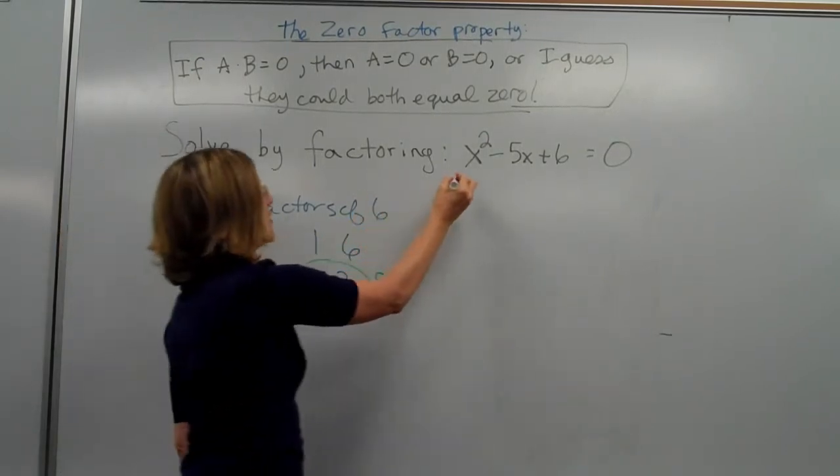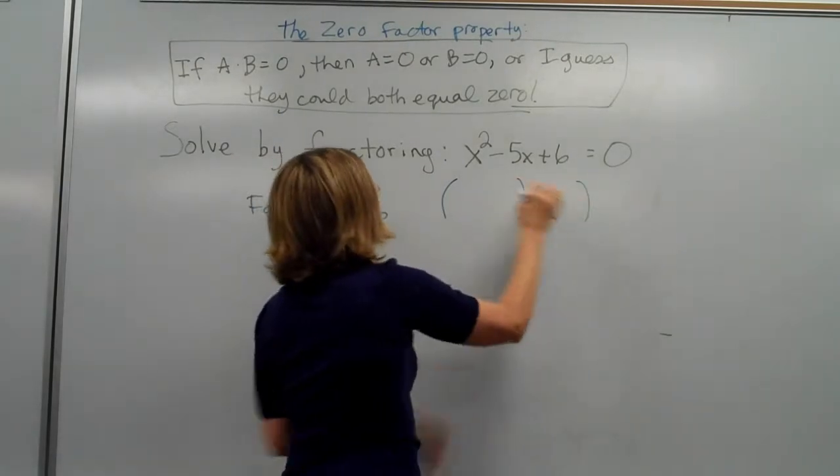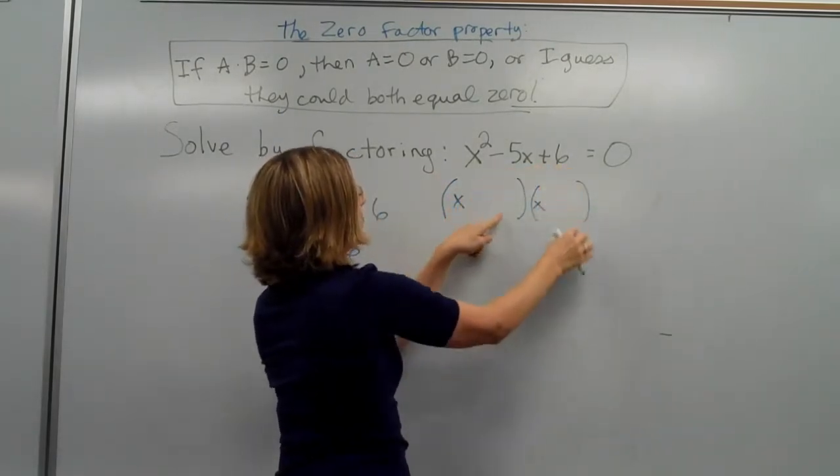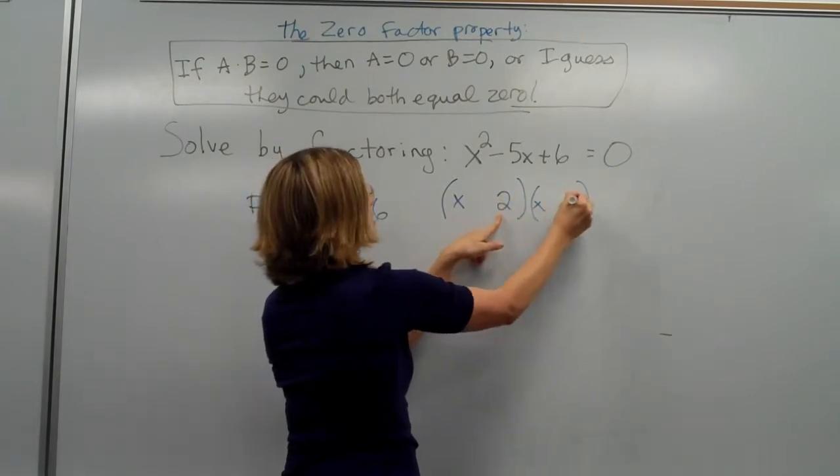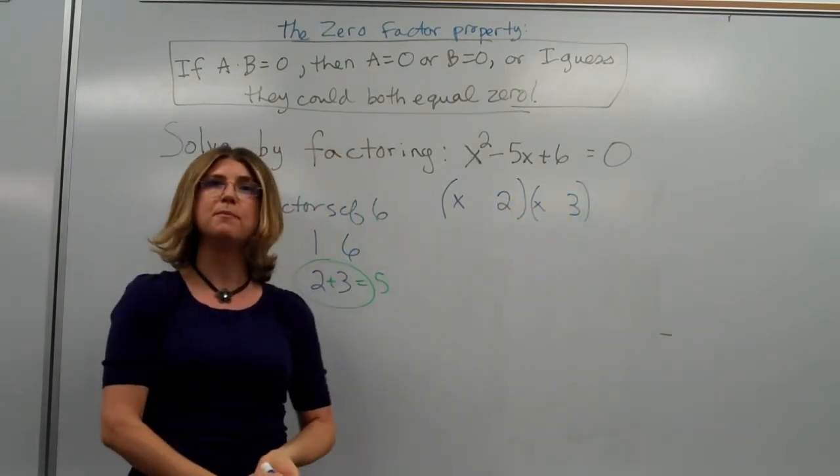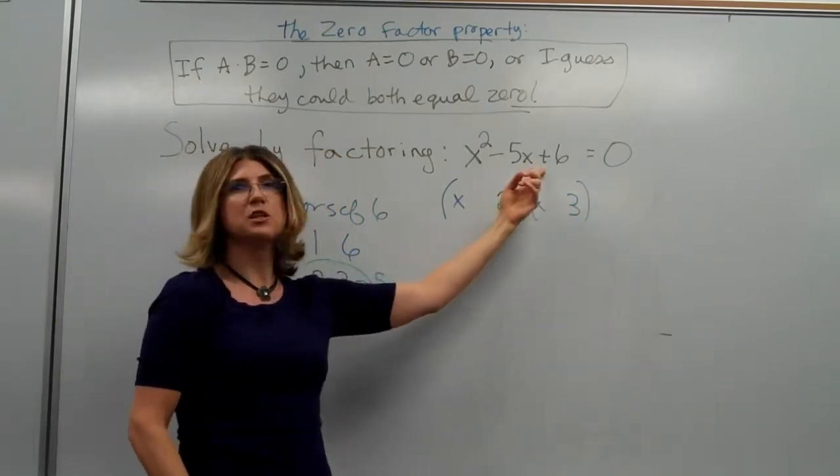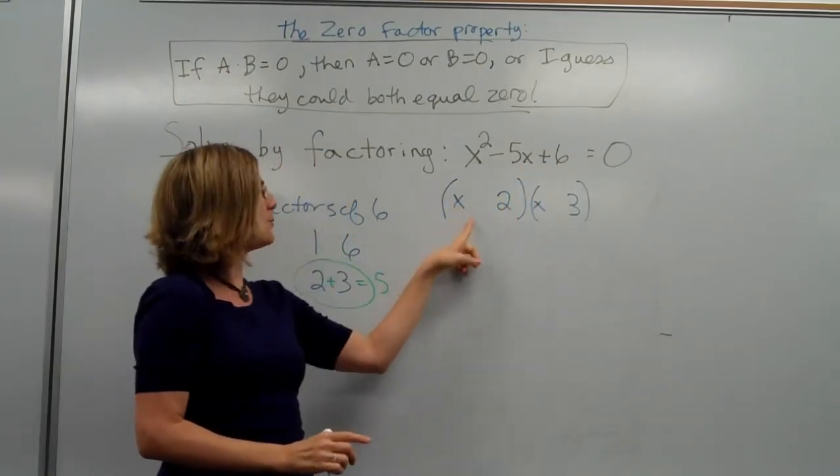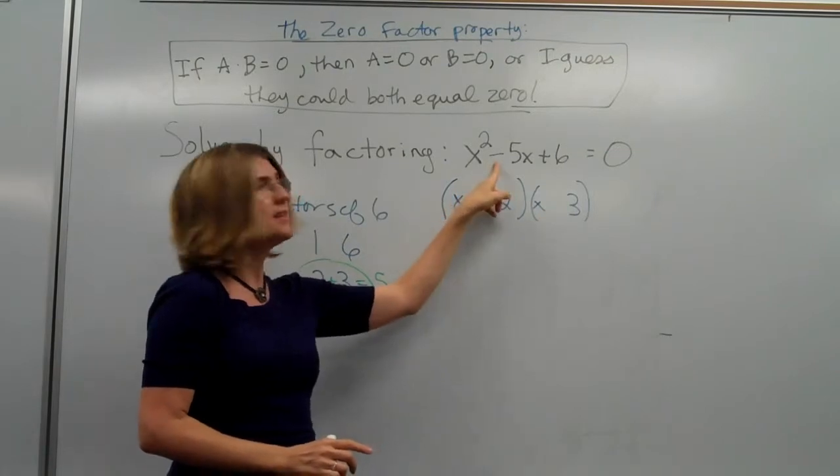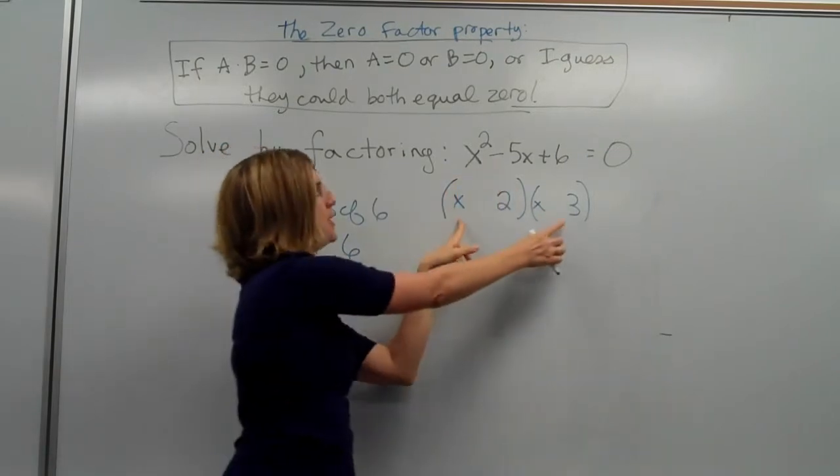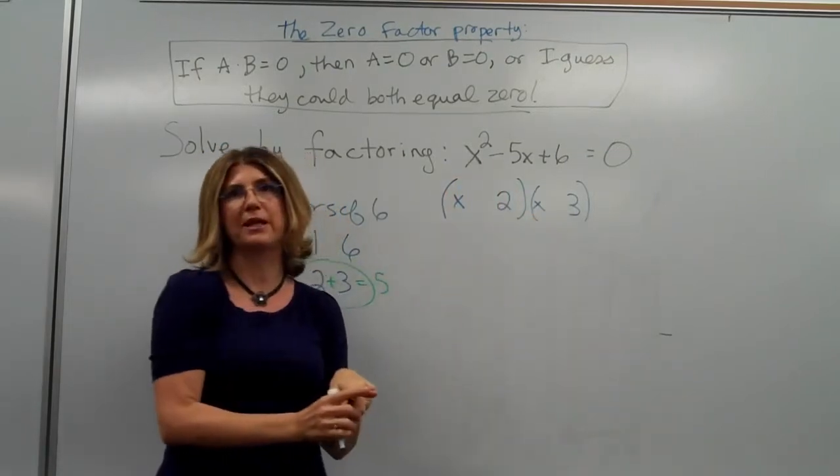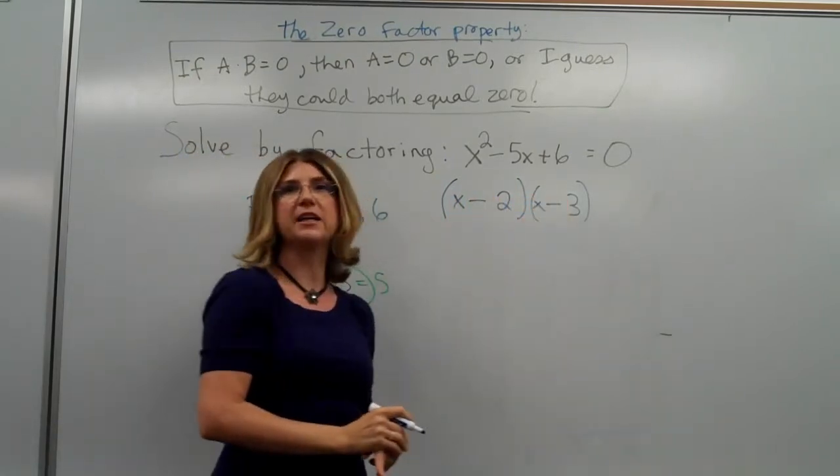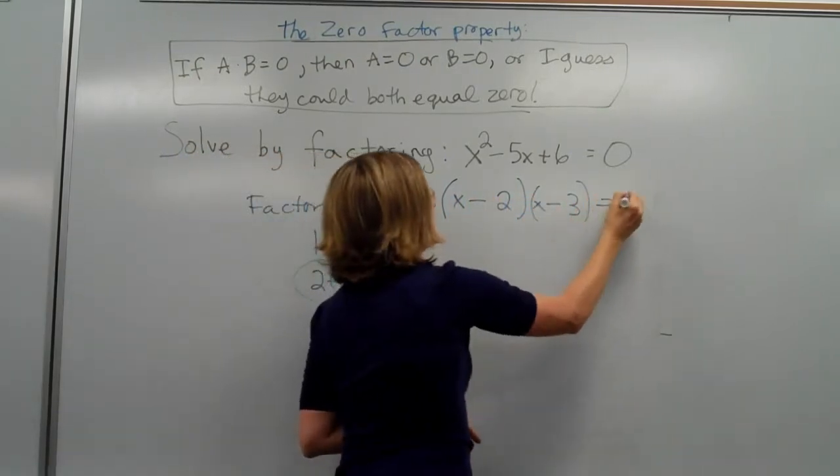So, now, we can factor this. The x squared will factor into x times x. And then the six will factor into two times three. Now, what are we going to do about the signs? This sign is positive, so we know that these two signs need to match. If we put plus and plus in here, then this sign will be off, right? Because we'll get plus three x and plus two x when we foil it out. So, instead, we want to use two matching negative signs. And this equals zero.